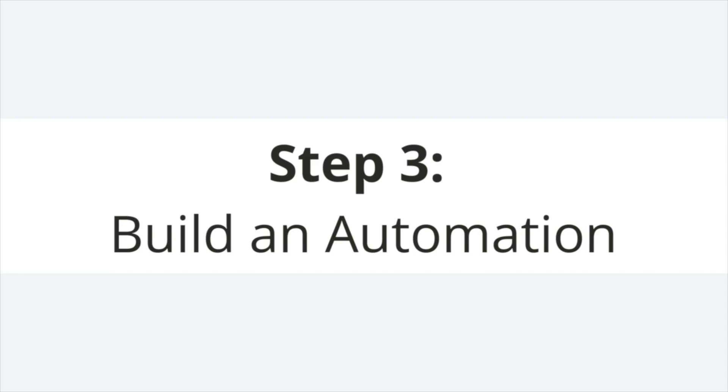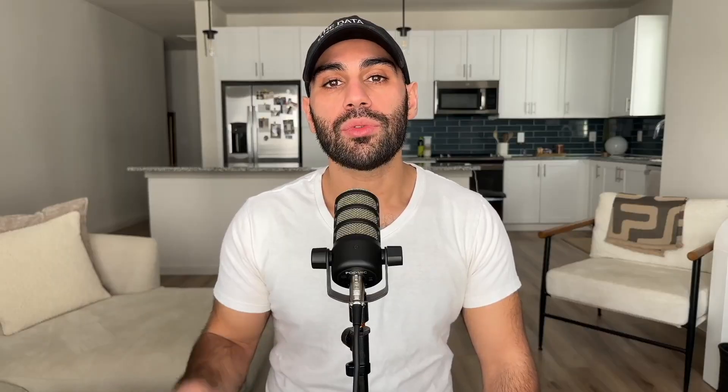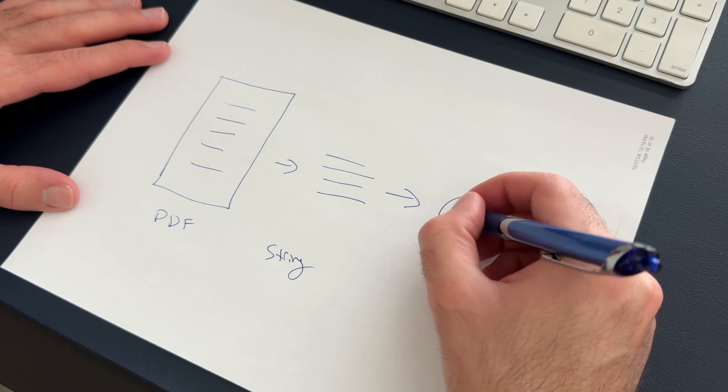Once I've become comfortable with ChatGPT and installed Python on my machine, my next step would be to build a simple automation using Python. My approach to generating project ideas would be to think of things I consistently use ChatGPT for and try to implement it in Python. This would require me to become familiar with OpenAI's Python API, so I'd start reading through their documentation and reviewing example code. Once I felt comfortable with the API, I'd start writing Python code, beginning by thinking through each step of my automation.